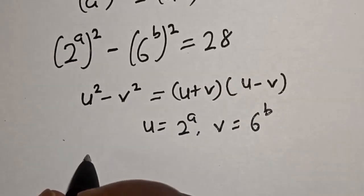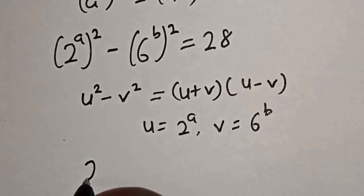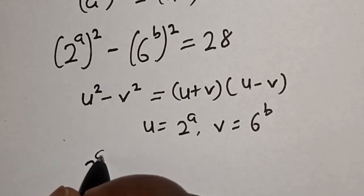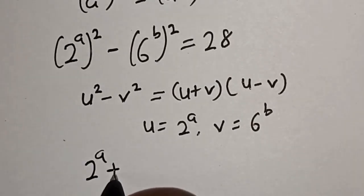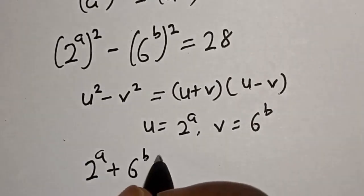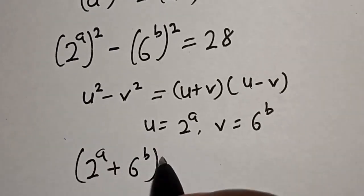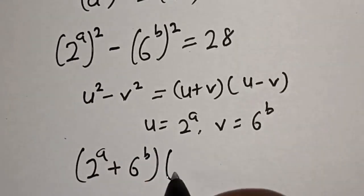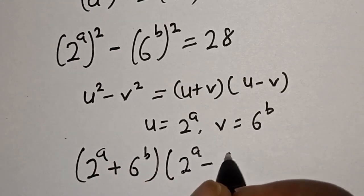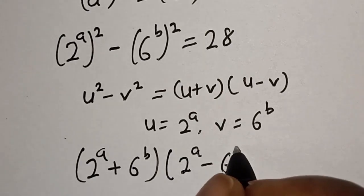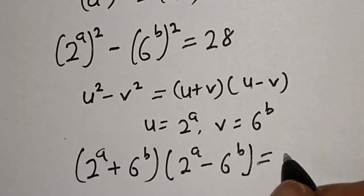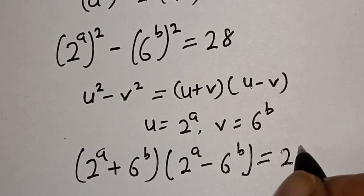We have 2 to the power of a plus 6 to the power of b, multiplied by 2 to the power of a minus 6 to the power of b, is equal to 28.